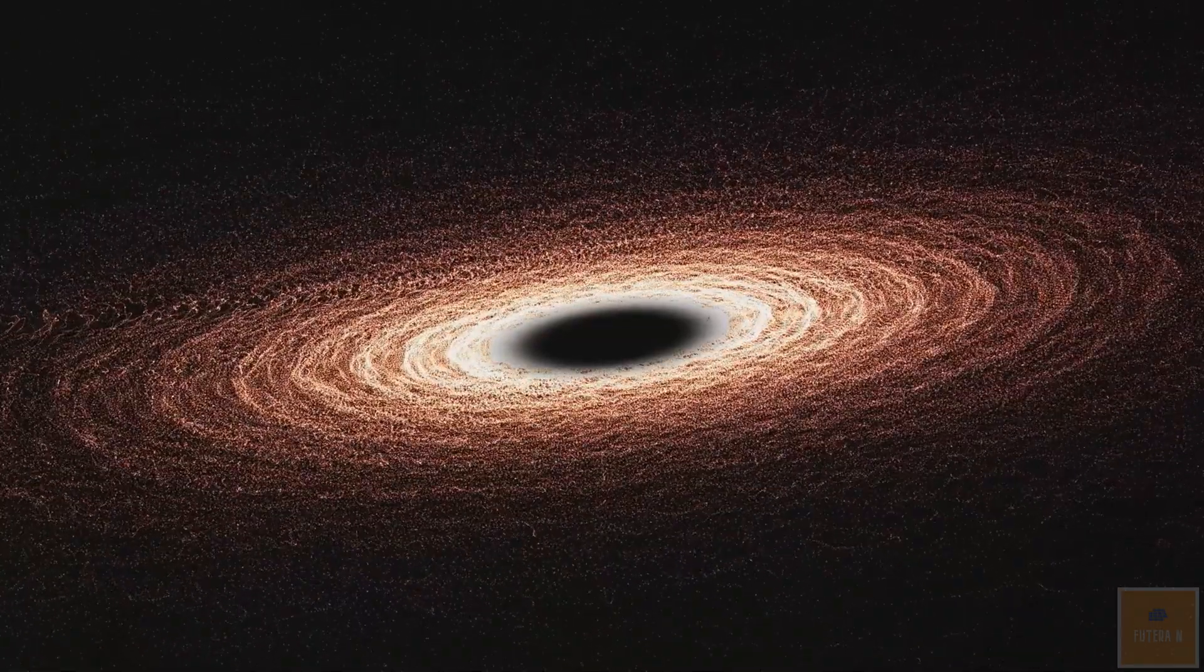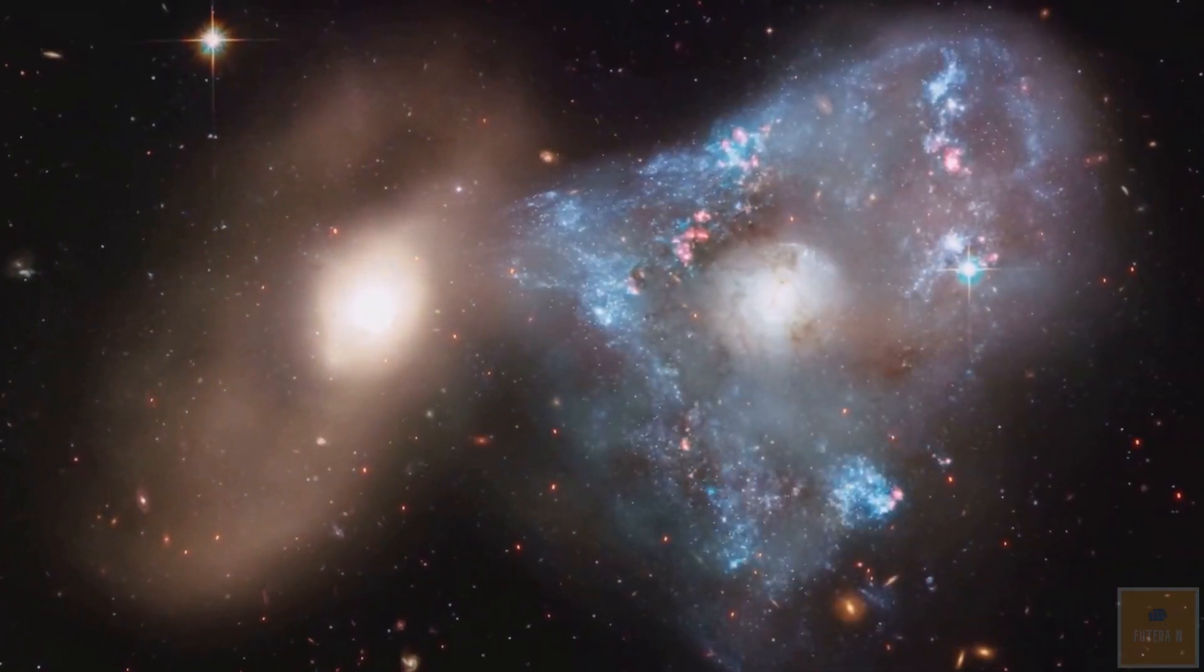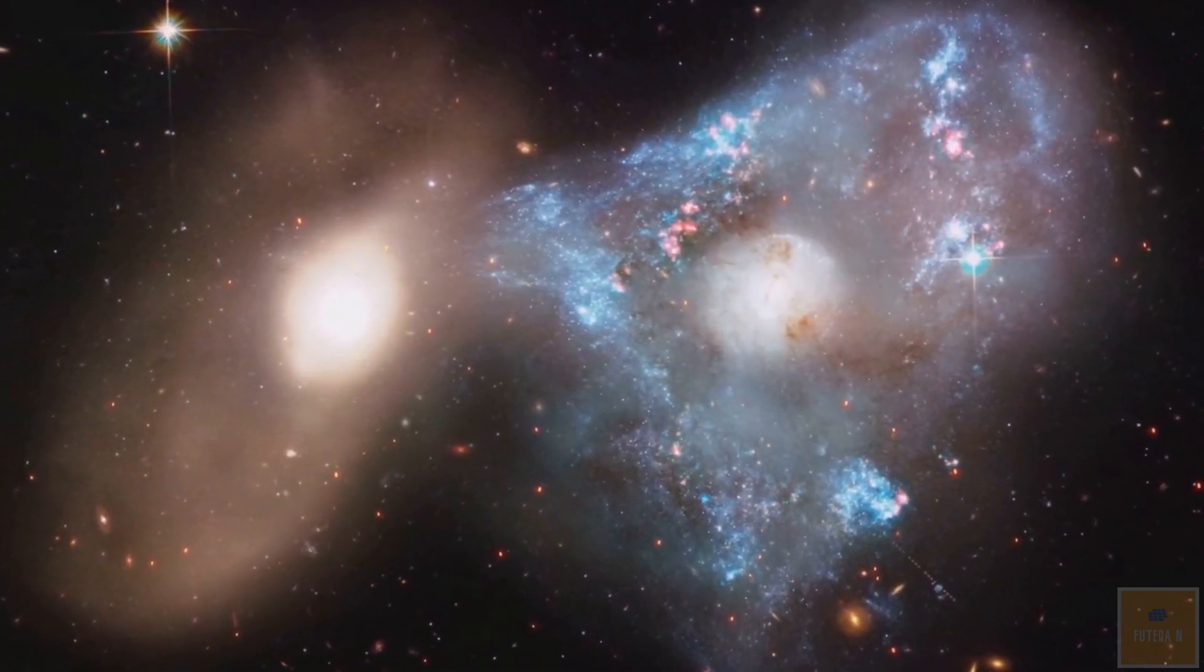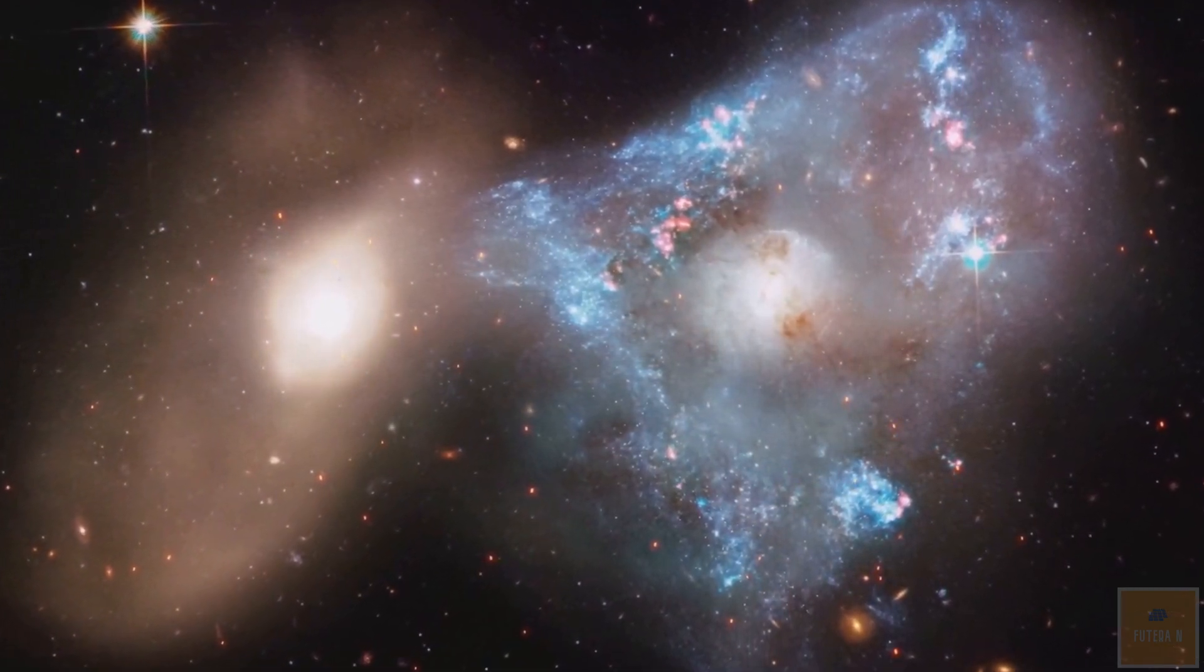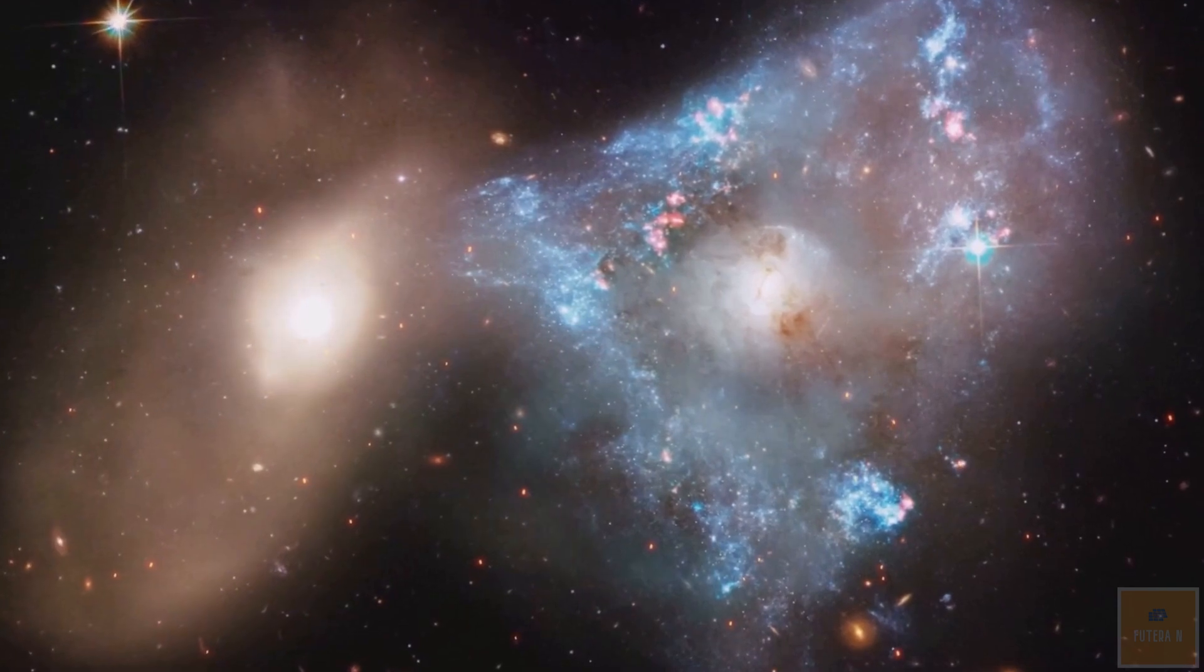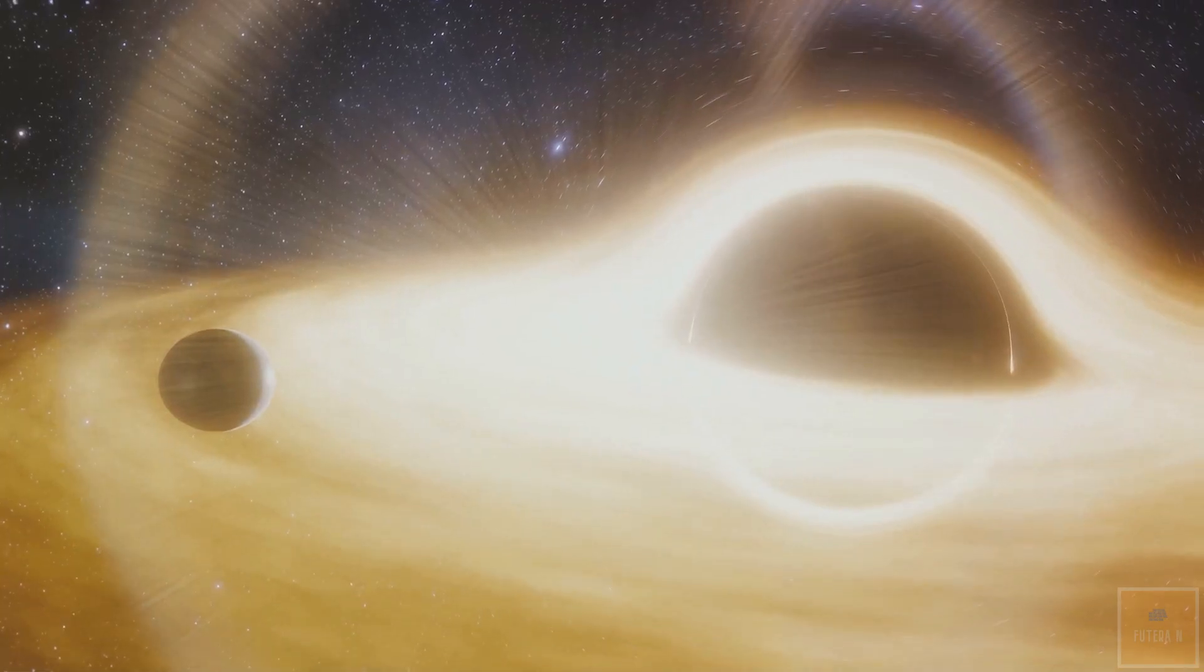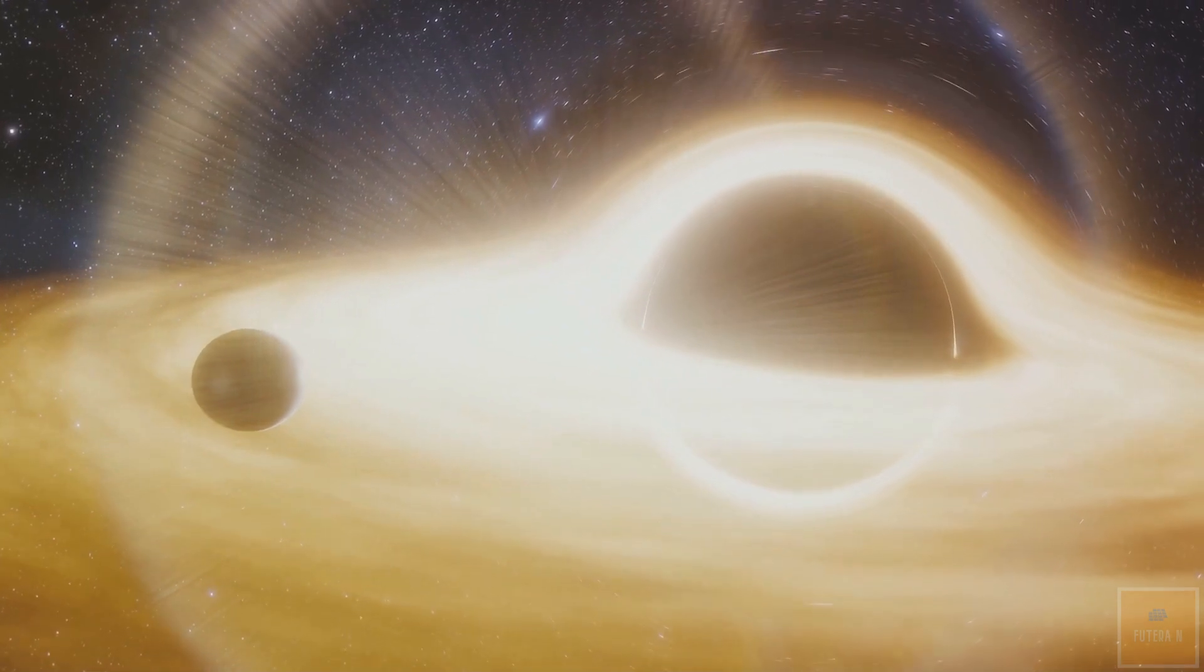Rogue black holes are not bound to any galaxy and are the result of incomplete mergers when two galaxies collide. Only one rogue black hole, located 5,000 light years away, has been directly detected, moving at around 45 kilometers per second.